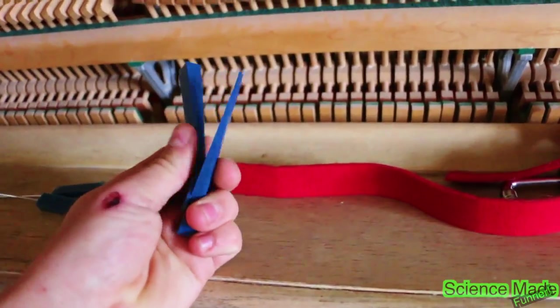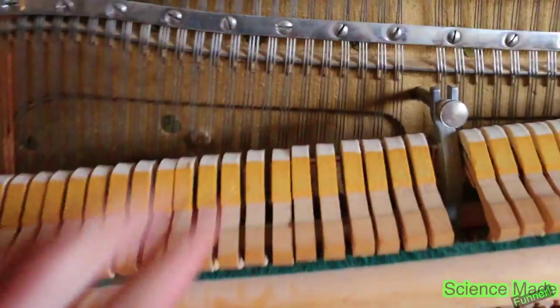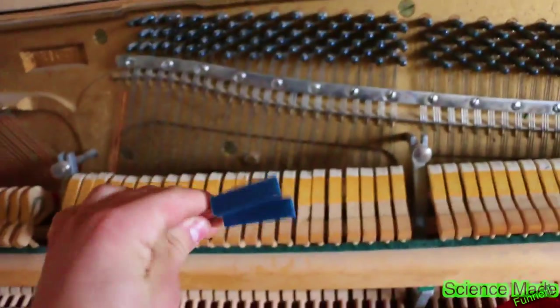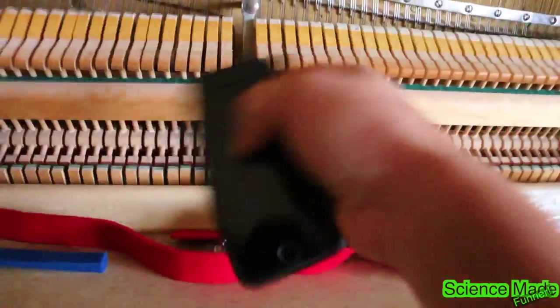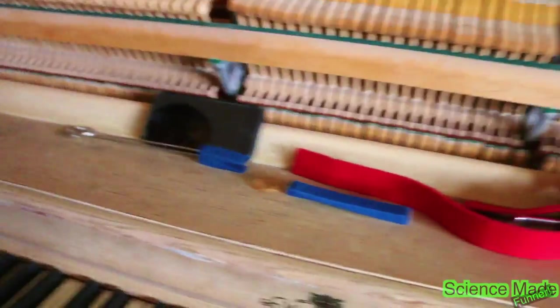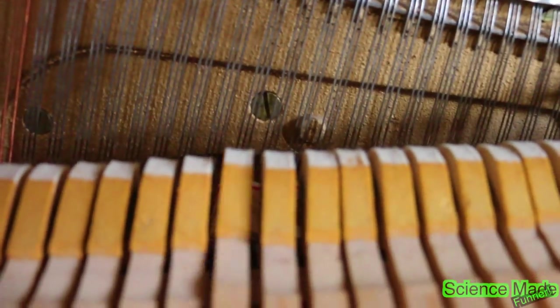I don't know what any of these tools are named. The wrench has got like a socket thing, these muters that you use for sticking in between the strings, and then you have these which are more muters for tuning it.